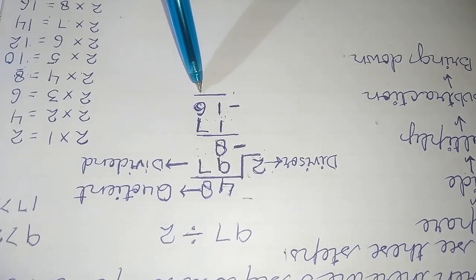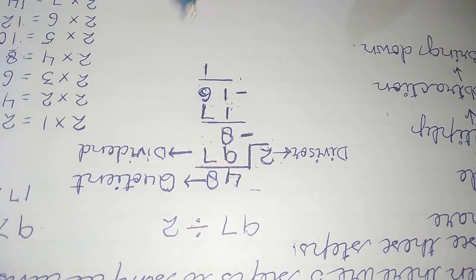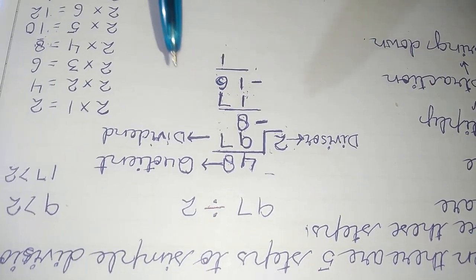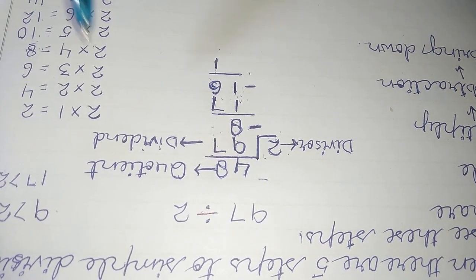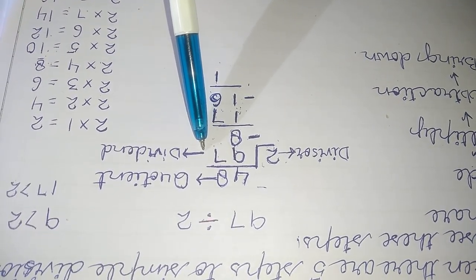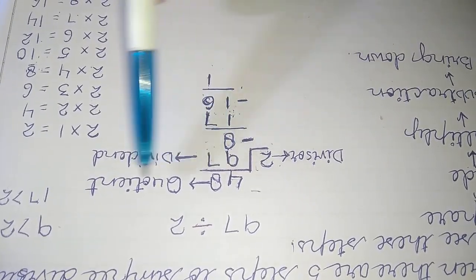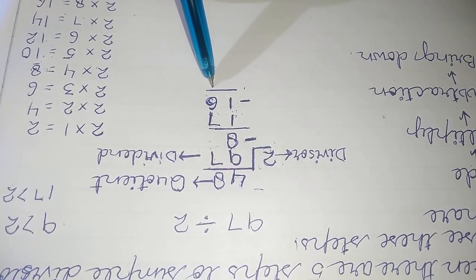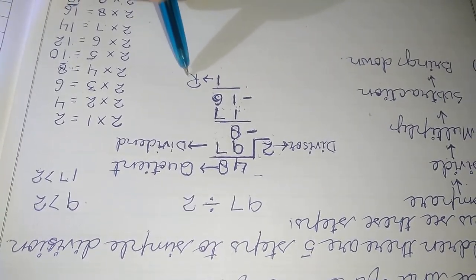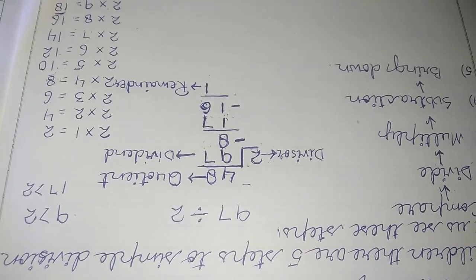17 minus 16 equals 1, so we write 1 in the ones column. There are no more digits to bring down, so we have finished the division. The divisor is 2, the dividend is 97, the quotient is 48, and the remainder is 1.